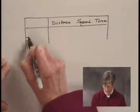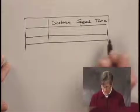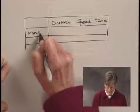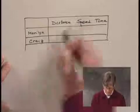And we're going to have two rows. One will pertain to Marilyn's speed and one to Craig's. So this will represent Marilyn, and this will represent Craig.